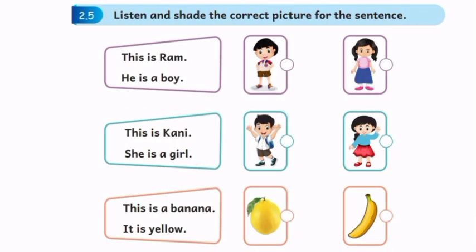Exercise 2.5: Listen and share the correct picture for the sentence. This is Ram. He is a boy — so share the first picture. The next one: This is Kani. She is a girl — share the second one. This is a banana. It is yellow — share the second picture.